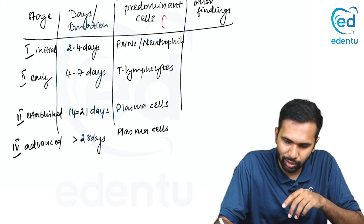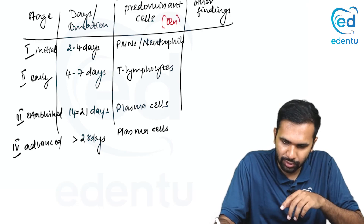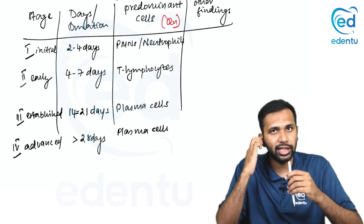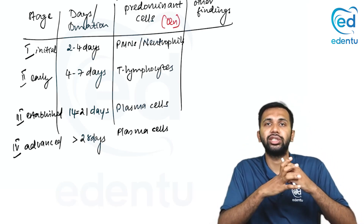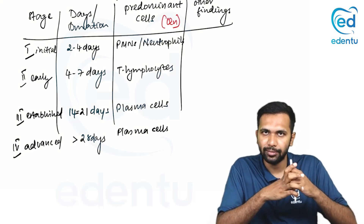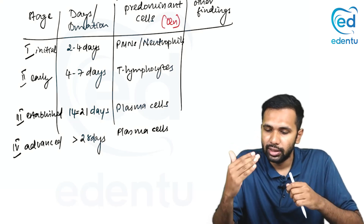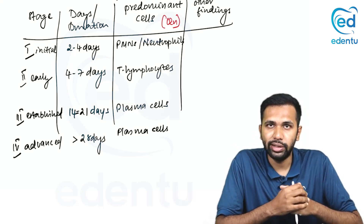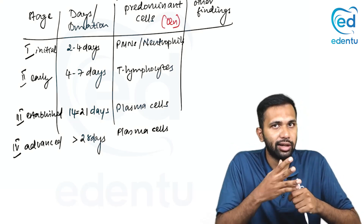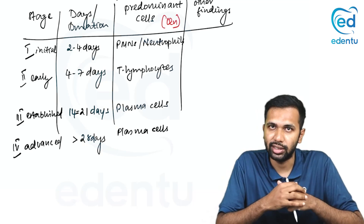They will ask you this question: which cells are seen maximum or predominantly in which stage of gingivitis? Stage 1 — neutrophils. Stage 2 — T lymphocytes. Stages 3 and 4 — plasma cells.